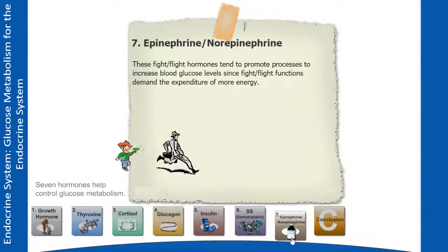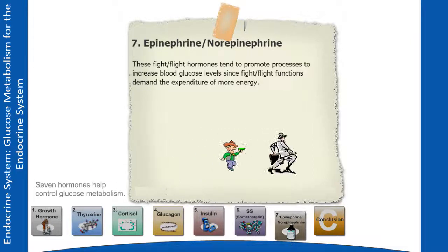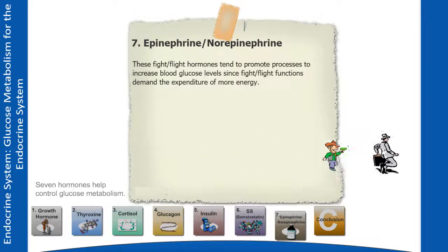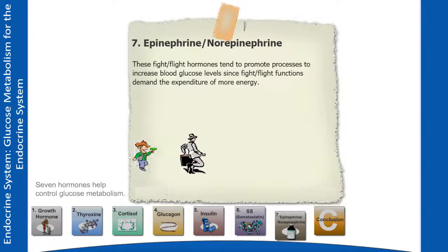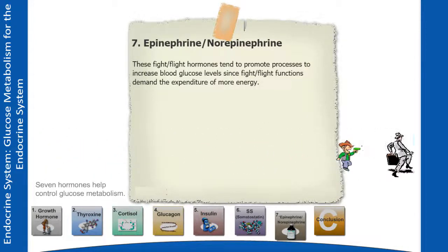Epinephrine and norepinephrine are fight-or-flight hormones that tend to promote processes to increase blood glucose levels, since fight-or-flight functions demand the expenditure of more energy.